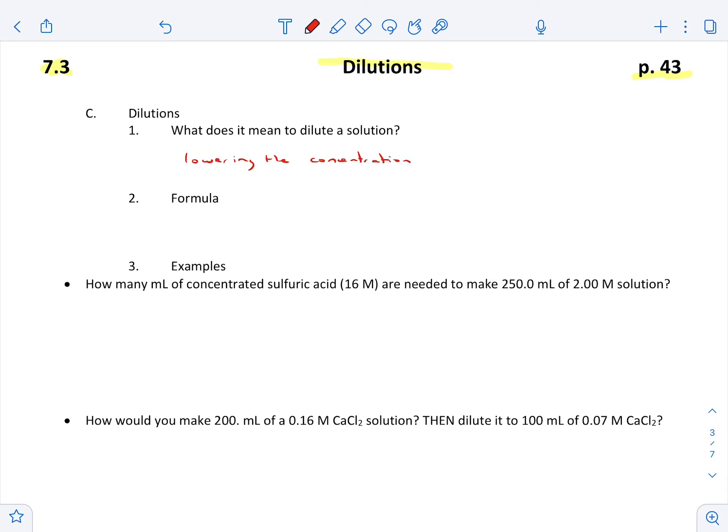So we are adding probably more water to lower the concentration. Some of you maybe buy like those MiO things, those are like concentrate and then you spray it in like a bottle of water and it's diluted. So that's what we're talking about doing.